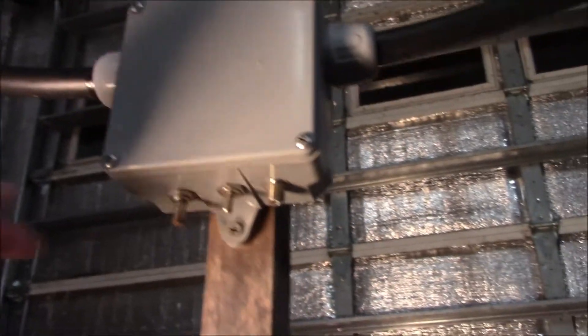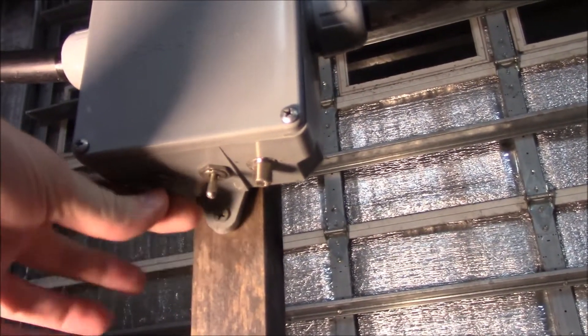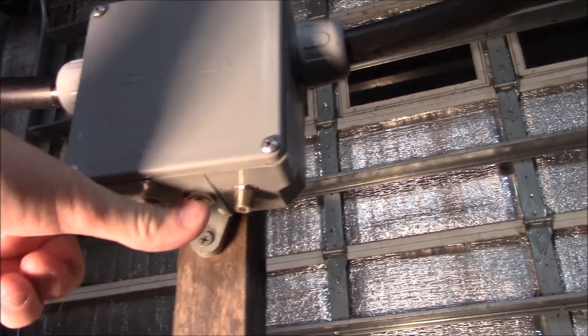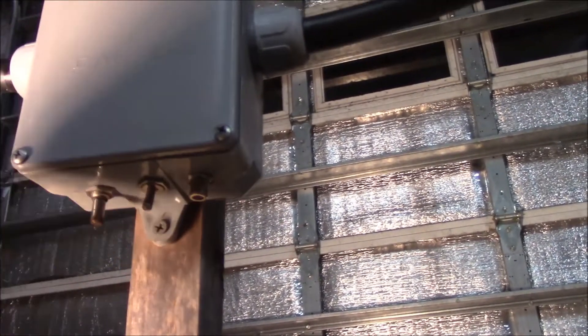On the bottom of the box we have a pot, probably a 10k pot, allows me to tune in the frequency. I have a switch to go from low range to high range, and then my cable output goes to my receiver.